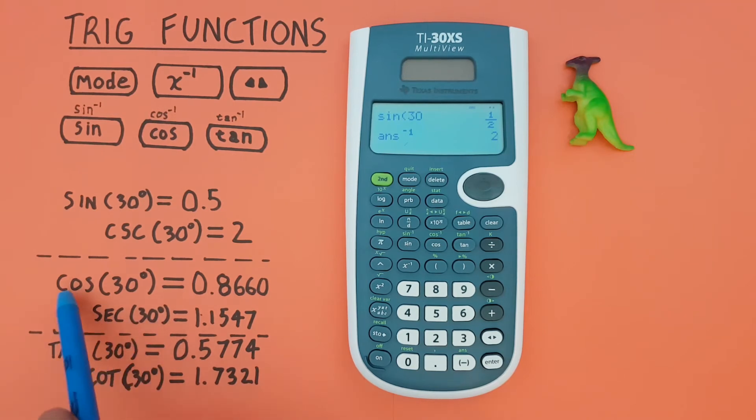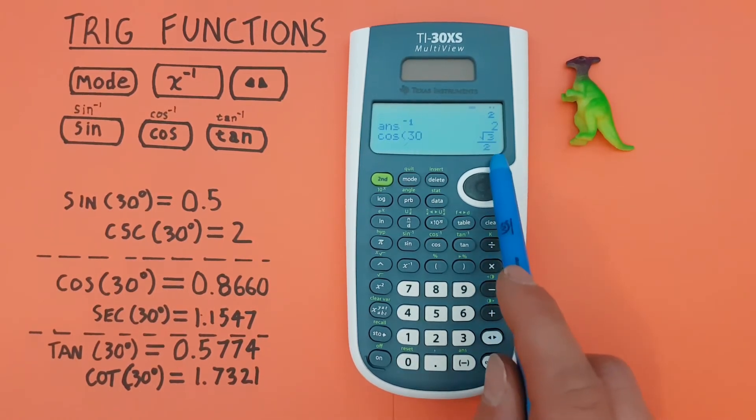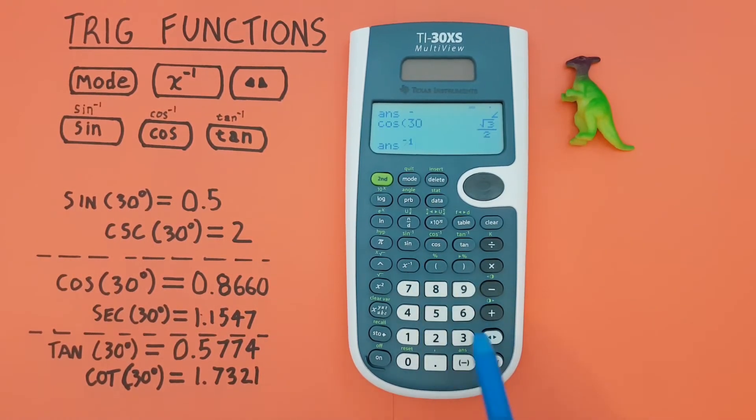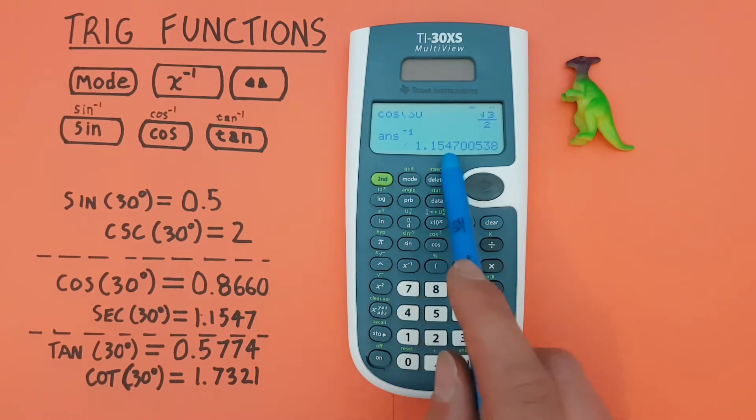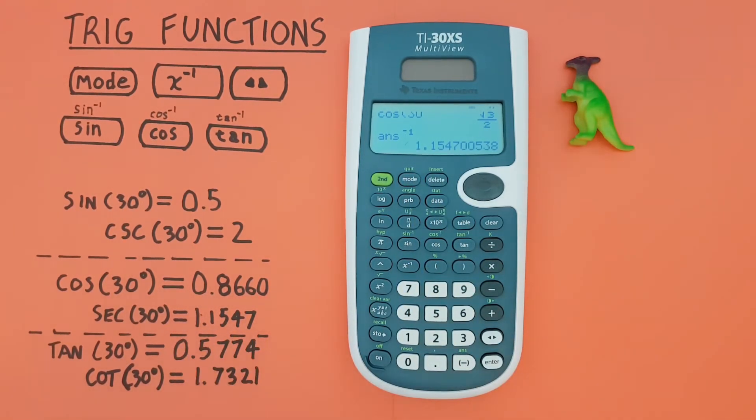For secant, we use cosine. So, again, cos of 30, inversed, gives us a secant of 1.1547, etc., which is correct.